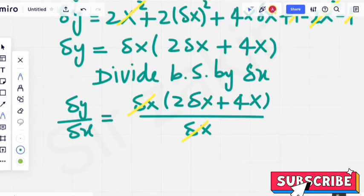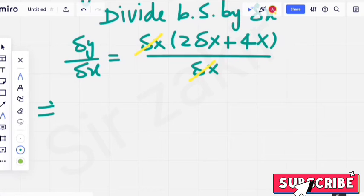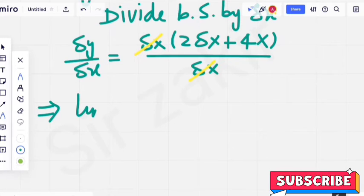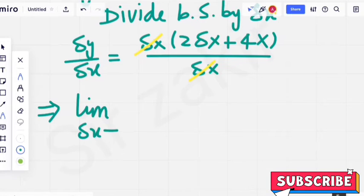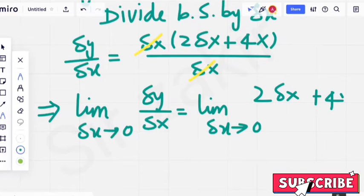After that we apply limit on both sides. This further implies that limit of left hand side is equal to limit of right hand side. Delta x approaches 0. Delta y by delta x. Limit on right hand side. 2 delta x plus 4x.